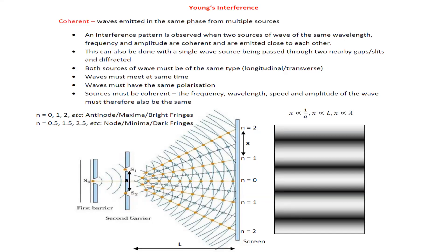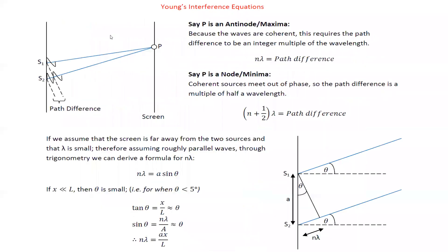If we say the distance between the slit and the screen is L, we want to derive a formula for constructive interference and destructive interference in terms of path difference. Say these are the two slits, S1 and S2, and we have a point P — we don't know what kind of interference it will be; it can be constructive or destructive. We want to find a relation for the formation of constructive or destructive interference.